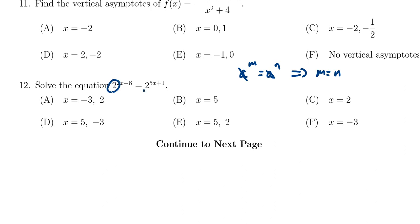Since both sides of this equation involve a power of 2, we can actually remove the 2 from play and just set the exponents equal to each other. So this becomes 2x minus 8 is equal to 5x plus 1.